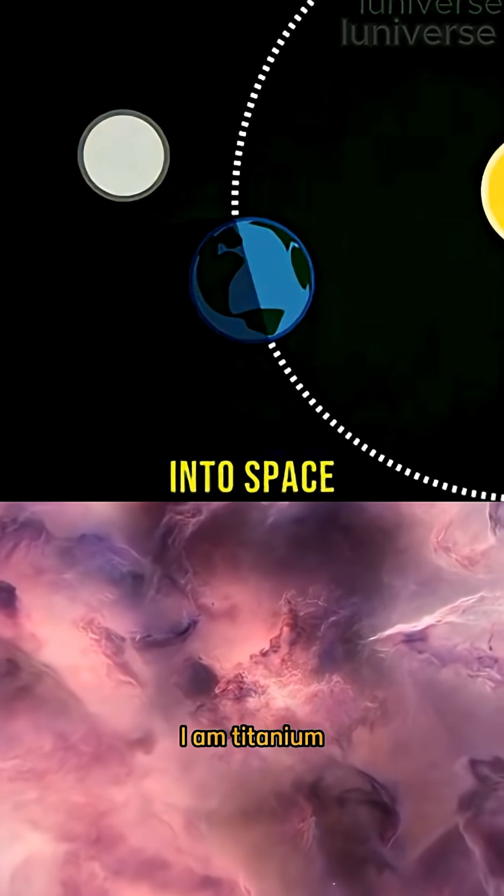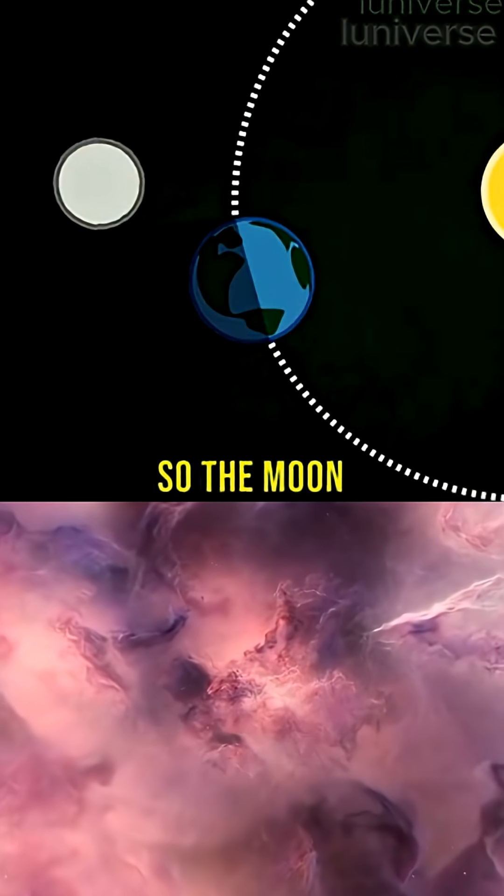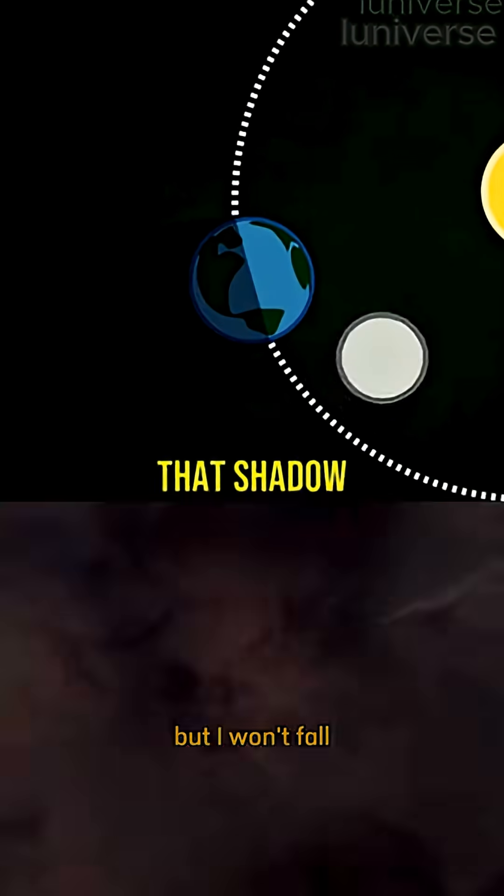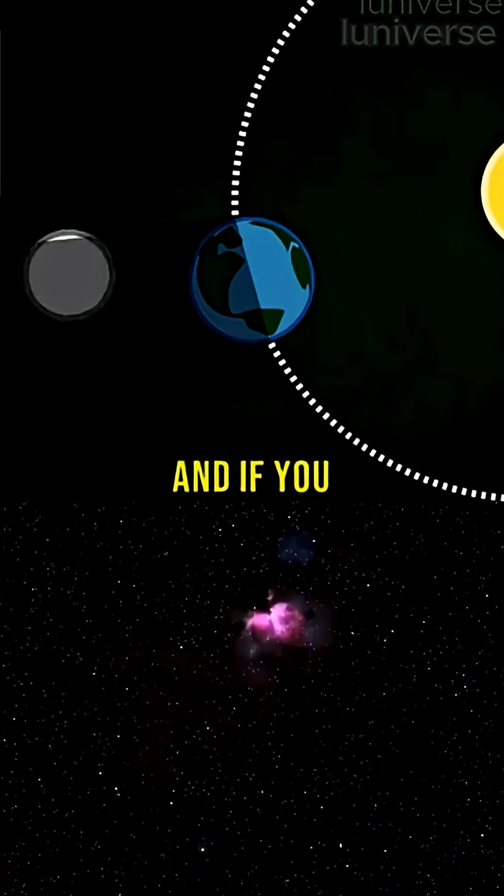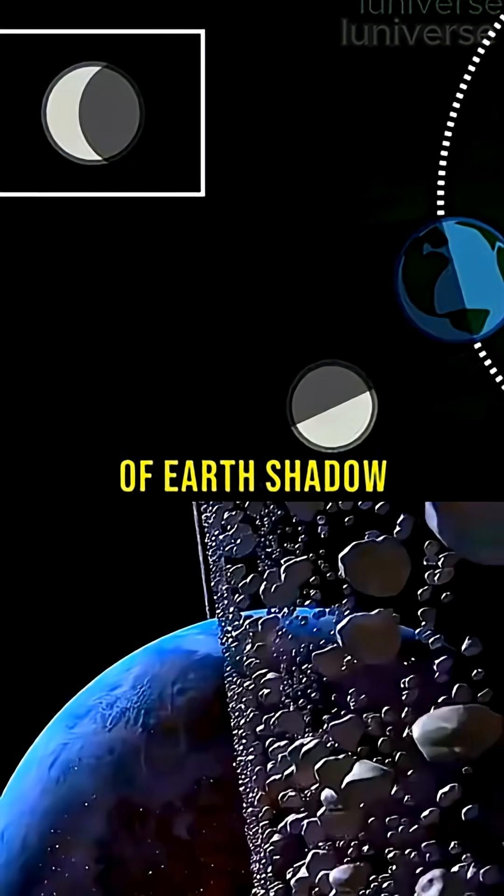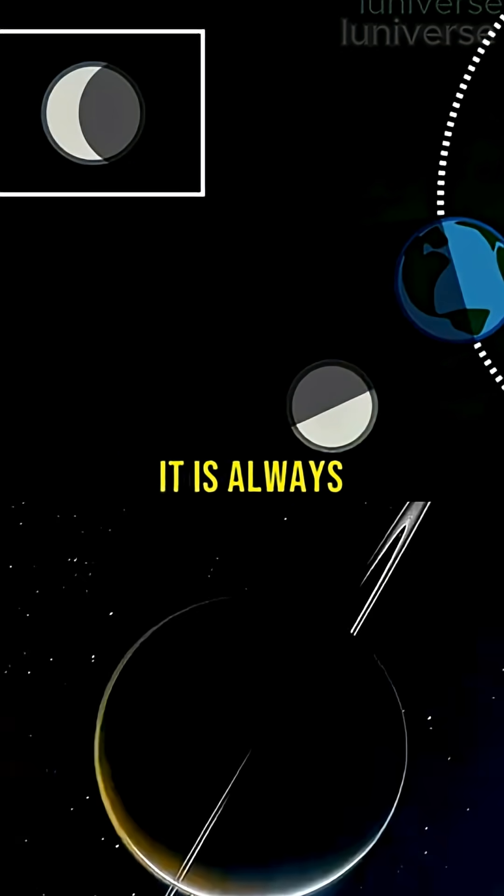It's always there no matter what. So the Moon occasionally passes through that shadow, and if you see the shape of Earth's shadow on the Moon, it is always round.